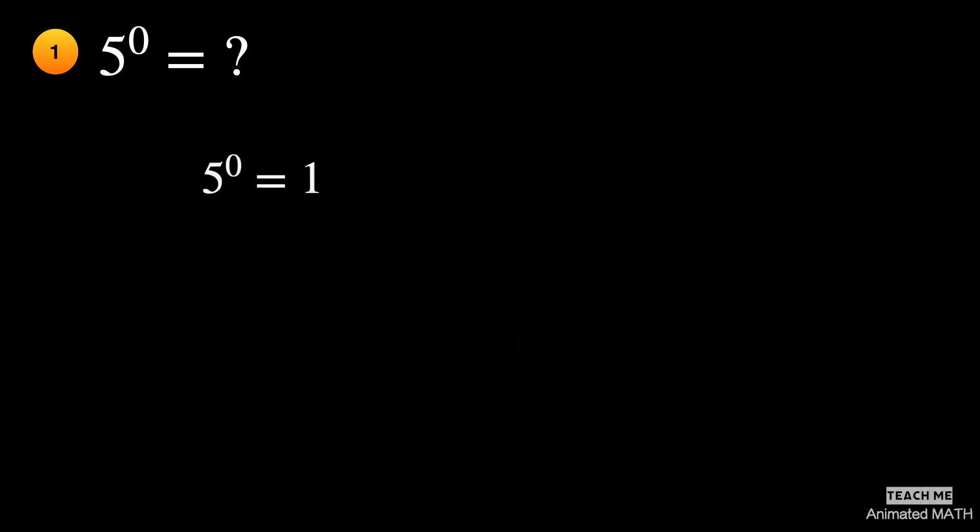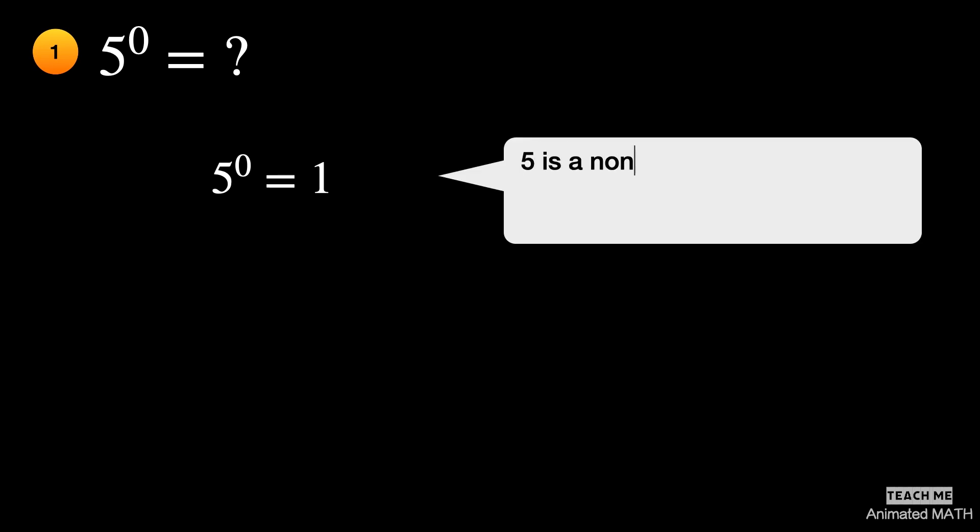Based on the property of zero exponent, any non-zero real number with a zero exponent is 1. So, 5 to the zeroth power is equal to 1.